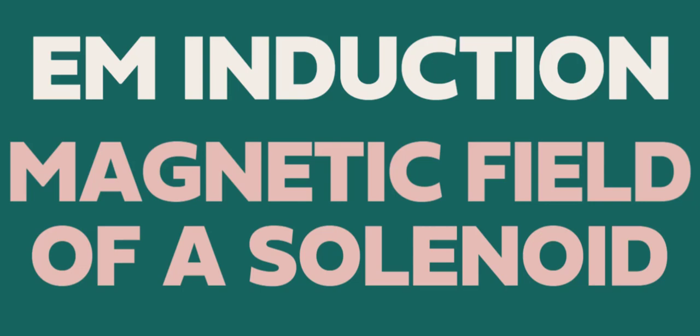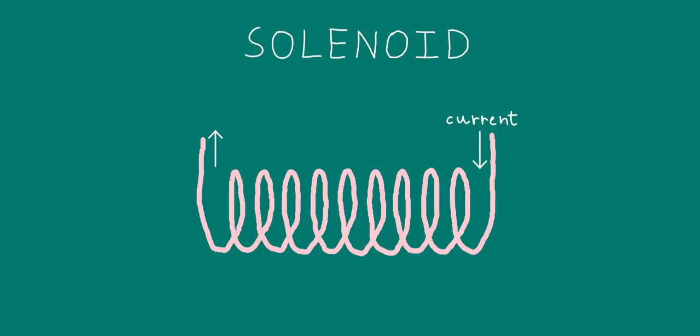Hello, welcome to Forest Learn. In this video, we'll be discussing the magnetic field due to a solenoid, which is a long coil consisting of many turns with a current flowing through it.